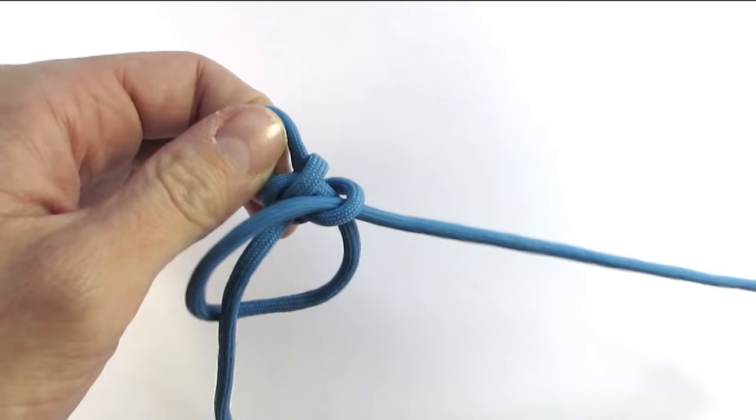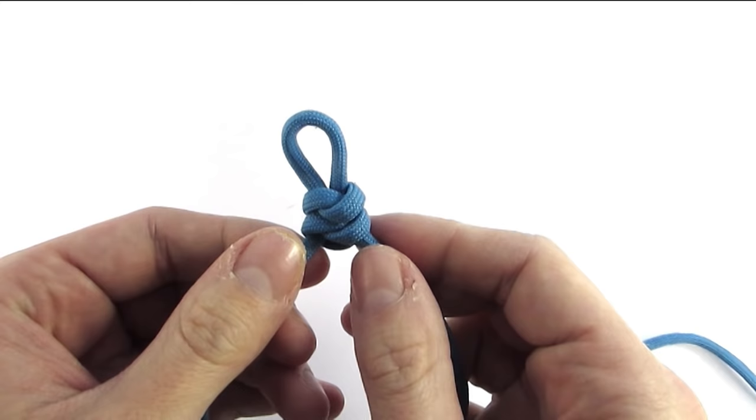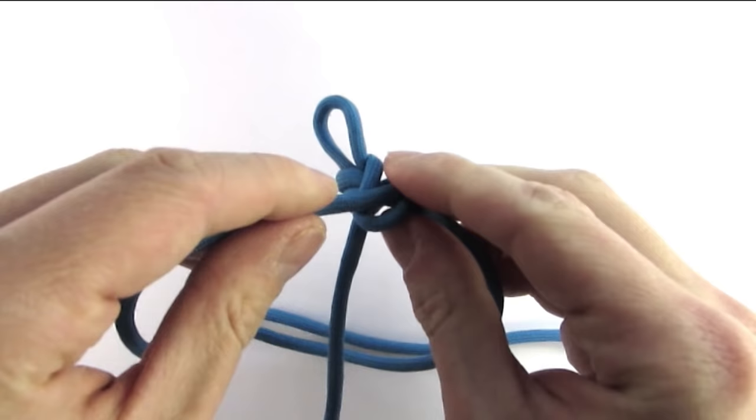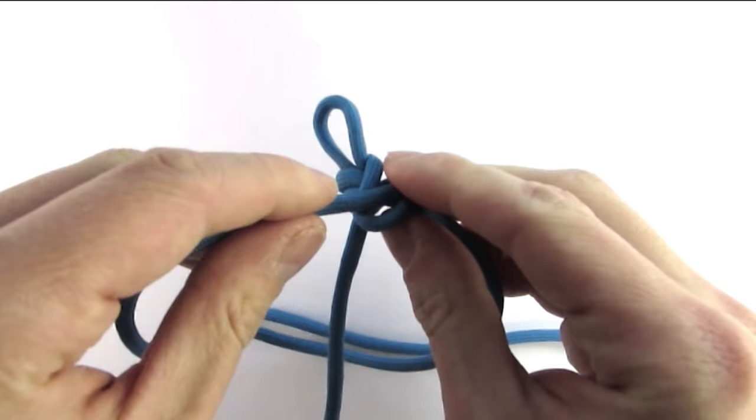And to simply make a series of snake knots, we're going to always flip our knot, then insert the right end through the last snake knot that we made on this side.